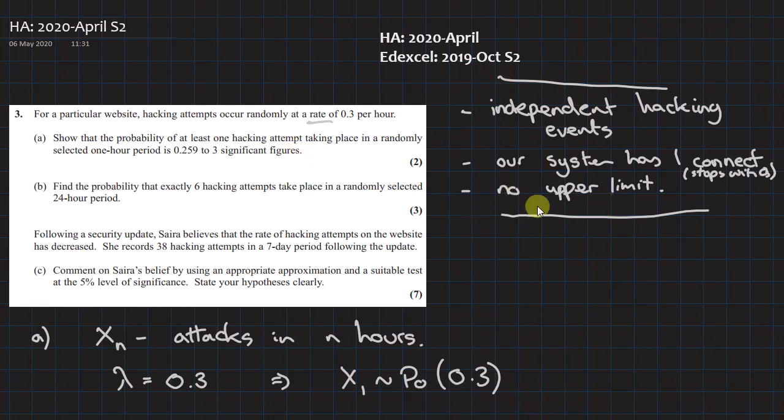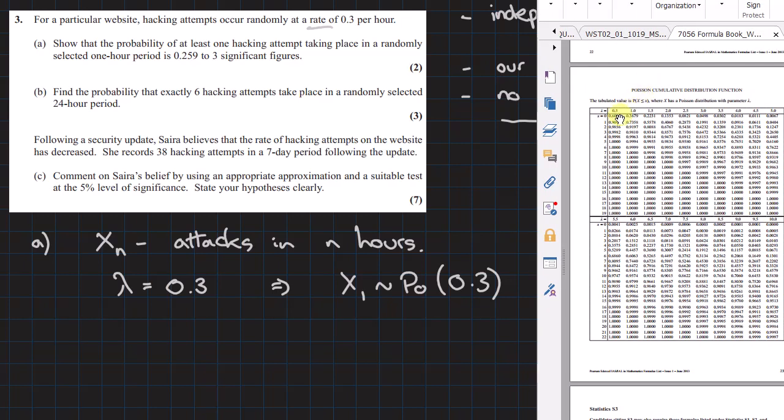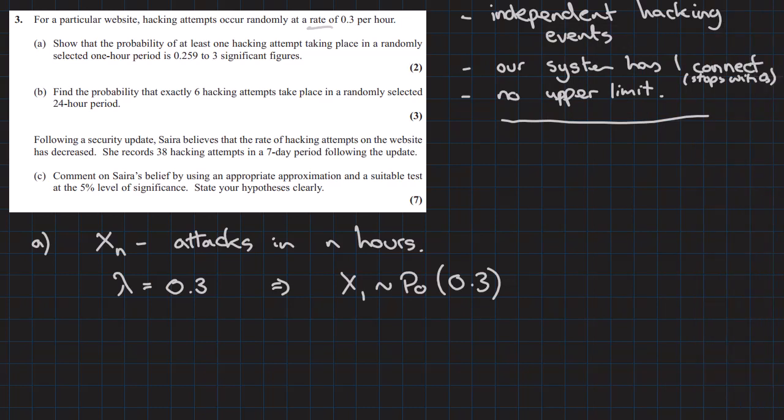Show the probability of at least one hacking attempt taking place in a randomly selected one hour period is 0.259 to three significant figures. First thing to check is do we have that in our Poisson tables? We can't use Poisson tables to solve this problem, so we've got to do it by calculation.